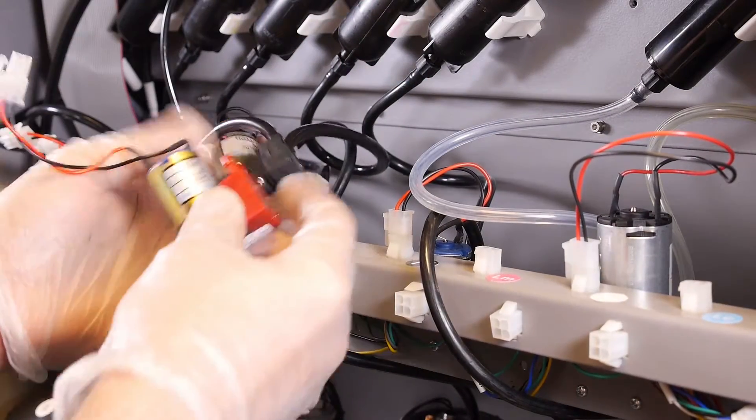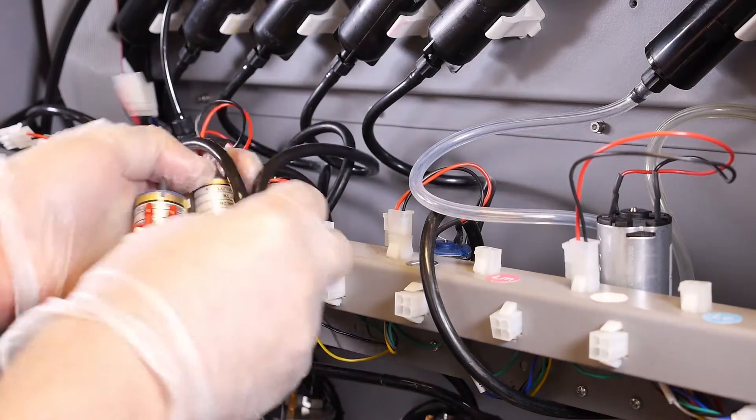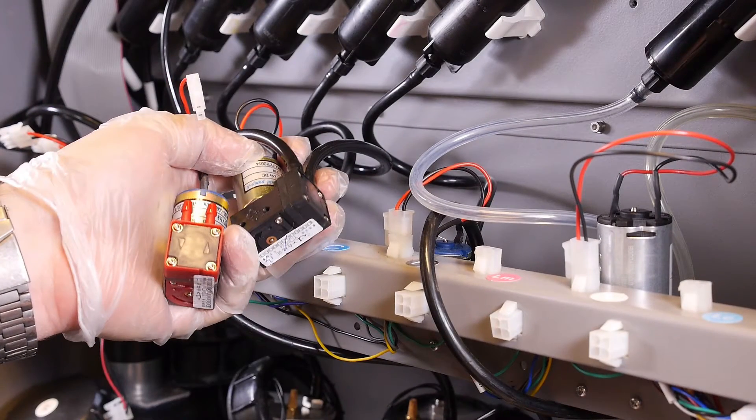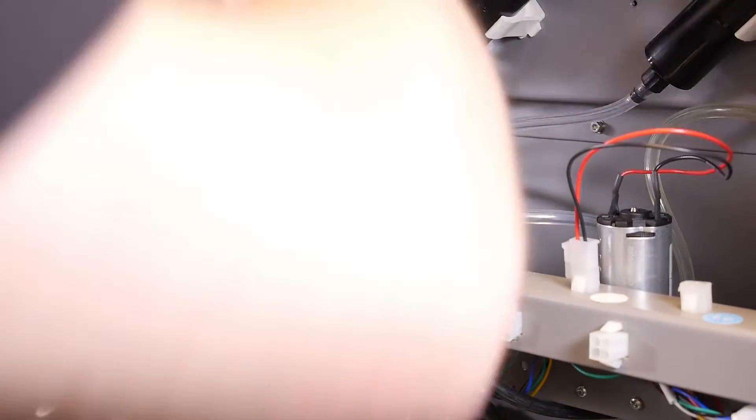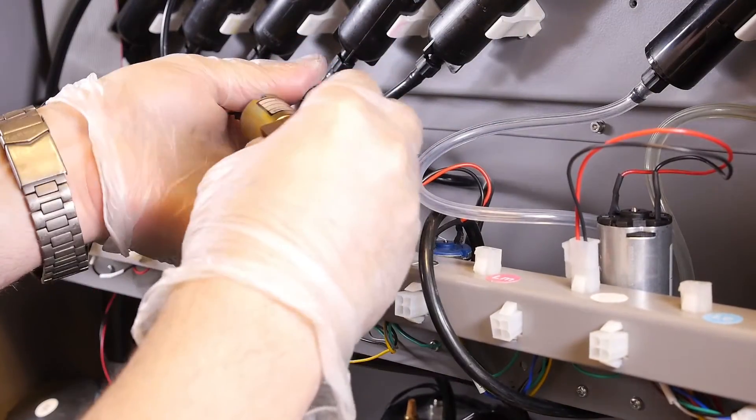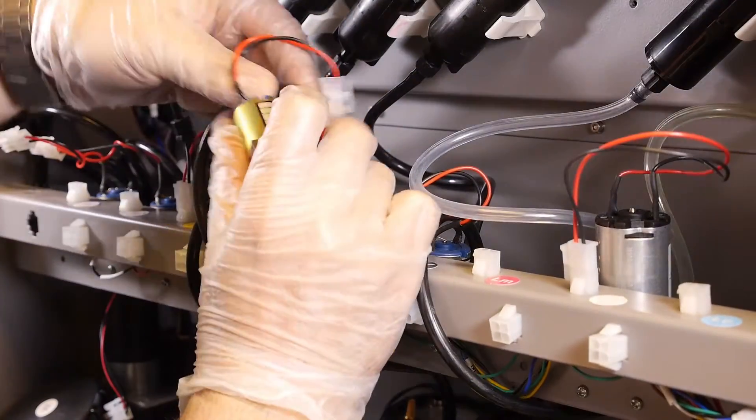Align both pumps in the same orientation and observe the ink pump tubing. Working one at a time with your diagonal cutters, clip the ink tubing off of the old pump and reattach it in the same location on the new pump.